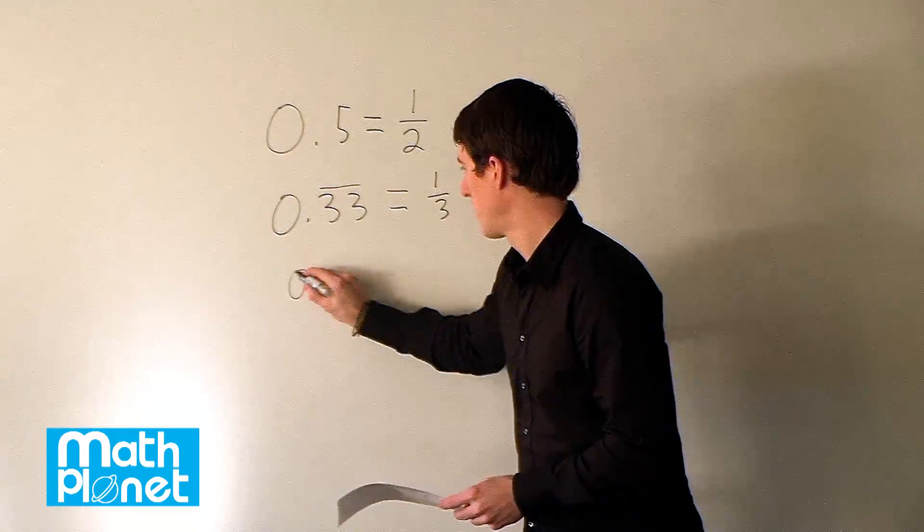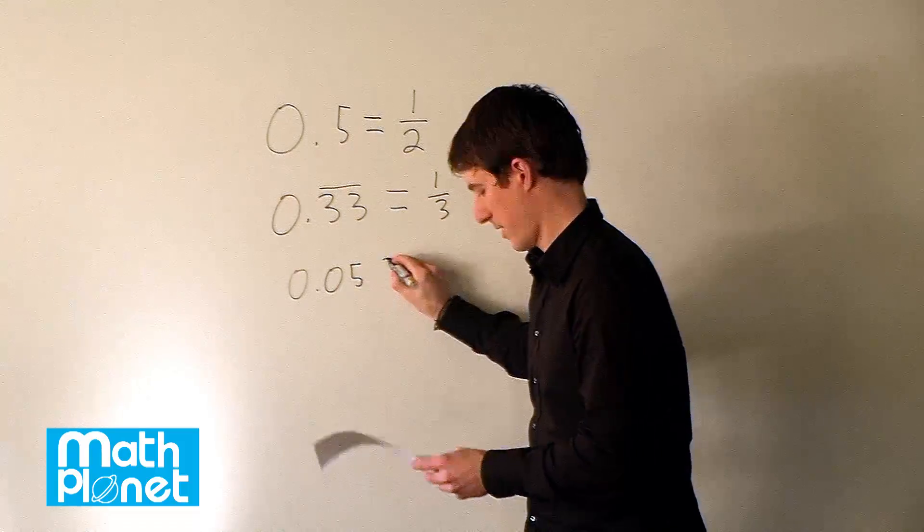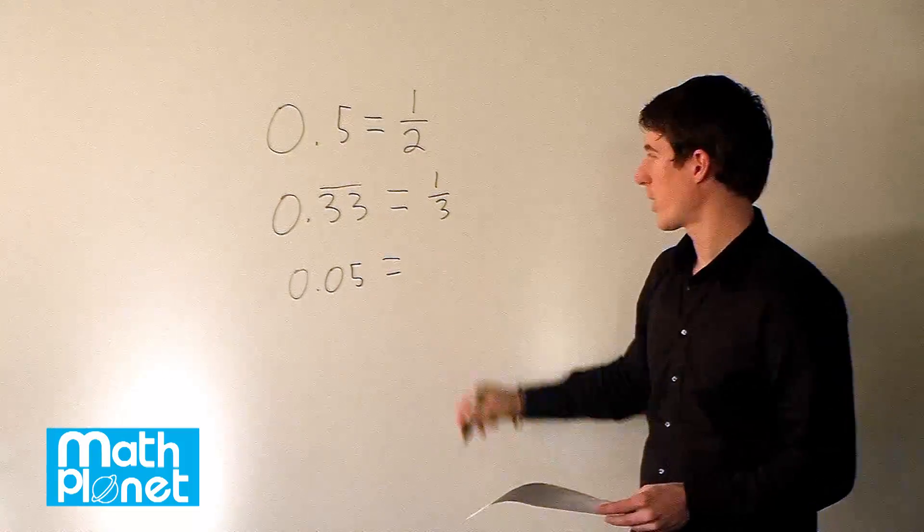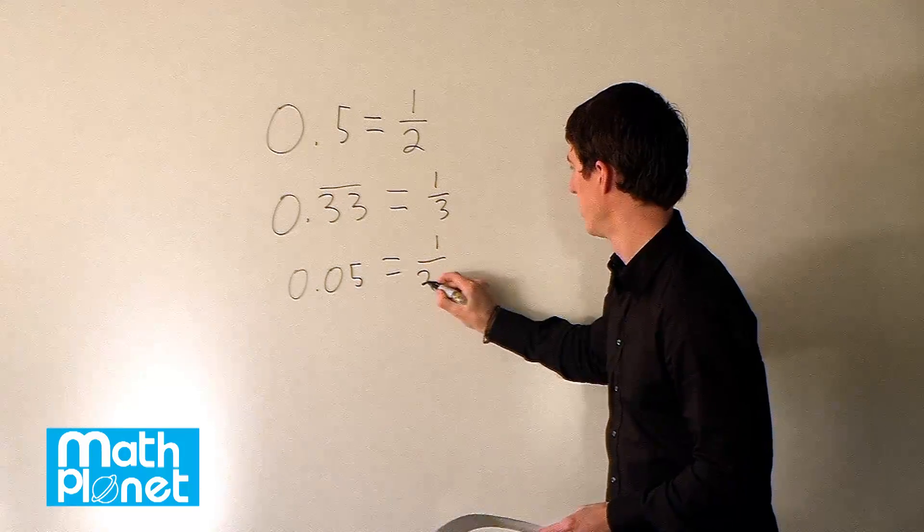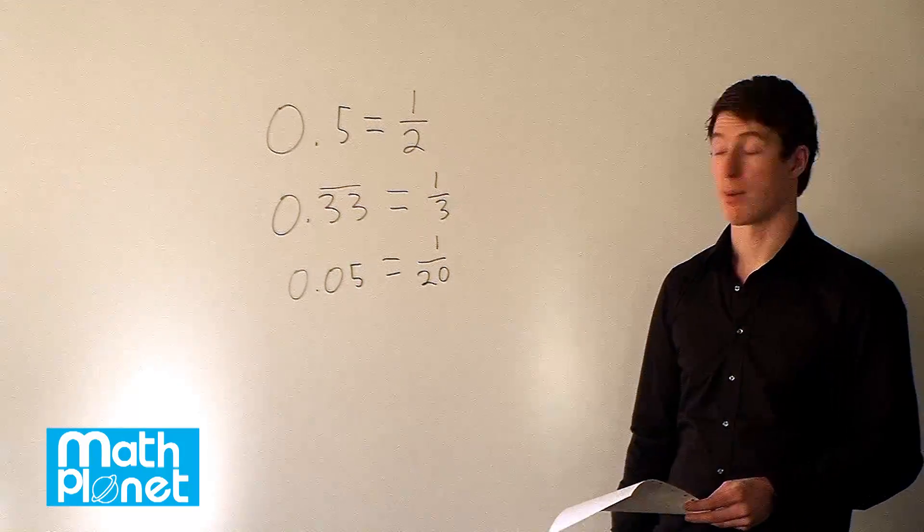0.05 then becomes just 1 20th. So this is 5% or 1 20th. A simple rational expression, rational number.